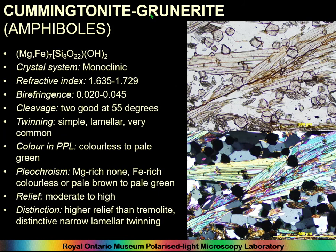Here is yet another type of amphibole — cummingtonite-grunerite, a series of magnesium to iron-rich end members, also with high birefringence. This is a metamorphic rock with quartz, cummingtonite-grunerite, and what looks like a garnet — isotropic and high relief. This was probably once a shaly, silty rock with quartz and clay minerals that was highly metamorphosed. Looking down the c-axis, you can see the two cleavages at 120 degrees.